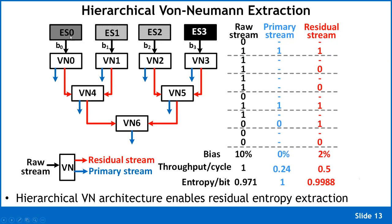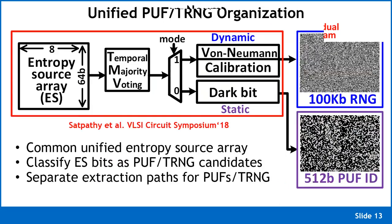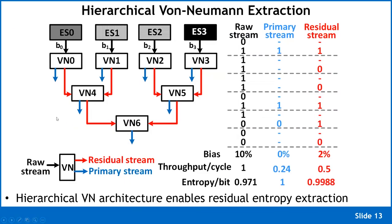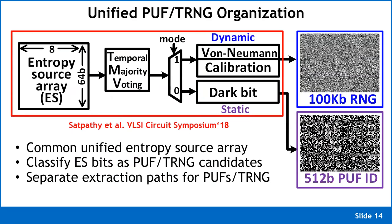With four entropy sources, you have a first level of von Neumann extractors producing four primary streams, then two more levels of extractors distilling entropy from residual streams. The final output is the concatenation of all the primary bit streams — the blue arrows — which collectively represent all entropy distilled from the four sources.